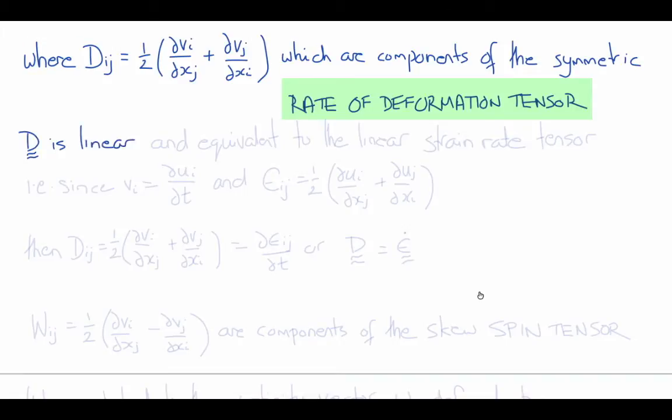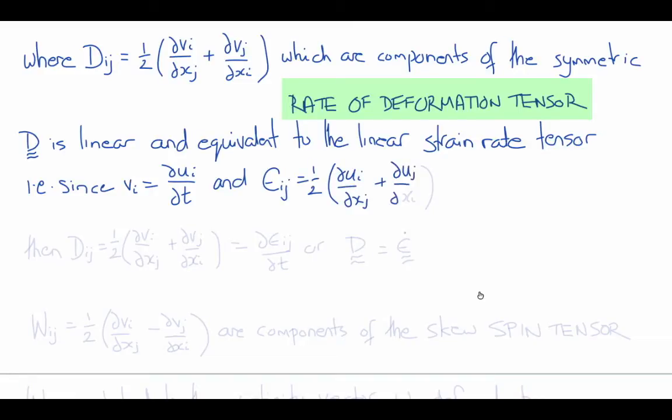So we see that D is a linear expression, there's no quadratic terms, and it's equivalent to the time derivative of the linear Cauchy strain tensor. In other words, since vi is del ui del t, and epsilon ij, the Cauchy strain tensor, is one-half del ui del xj plus del uj del xi, then that means that Dij is one-half of del vi del xj plus del vj del xi, will be the same as del epsilon ij del t. Or in tensor direct notation, D is equal to epsilon dot.